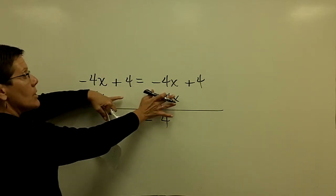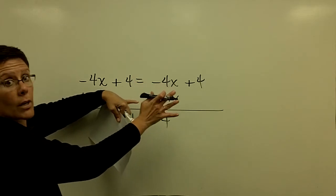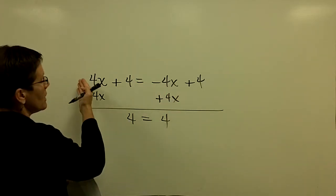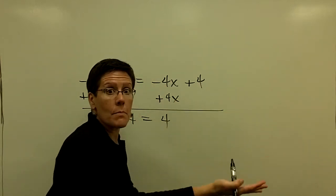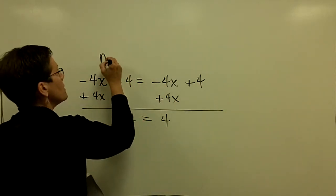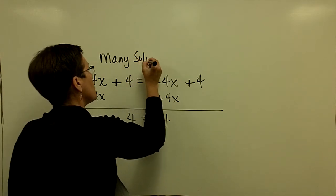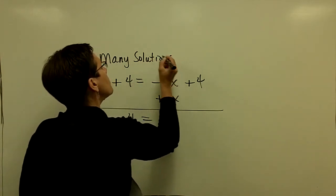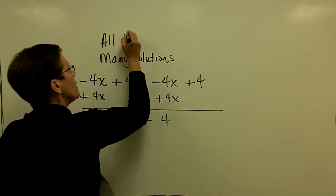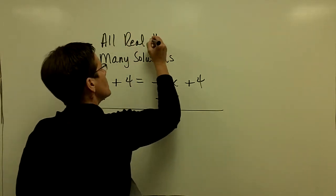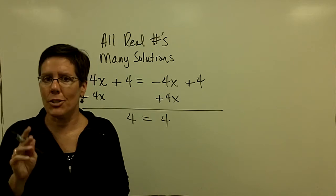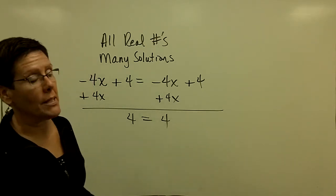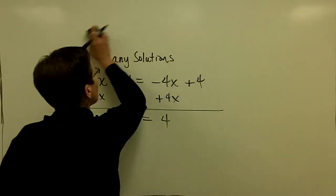And if you go back up here and notice that anything will work for x, because if you're always taking a negative 4 times the number and adding 4, and then on the right side the same thing, then you have many solutions, you would say for me. Or all real numbers work in that equation. So a couple of ways to state that. So two scenarios can occur. You can have no solutions or you can have many solutions. So watch for that. Okay, finally, last problem.